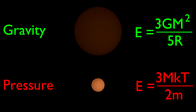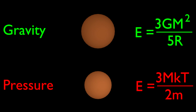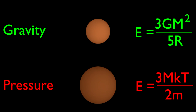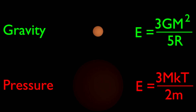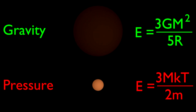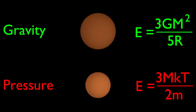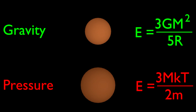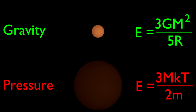The energy due to gravity is 3/5 · G·M² / R, where G is Newton's constant, M is the mass of the gas, and R is the radius of the gas. The energy due to pressure is 3/2 · M·k·T / m, where k is Boltzmann's constant and T is the temperature of the gas.